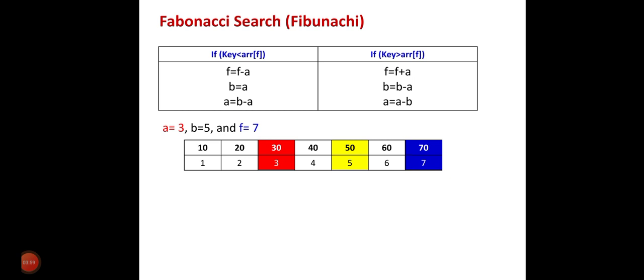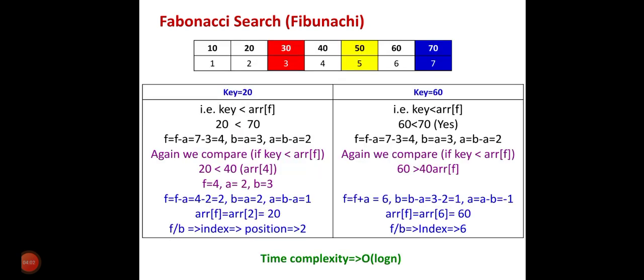Let us take one example. If the key element is 20, then 20 is compared with 70. Since 20 is less than 70, F equals F minus A, which is 7 minus 3 equals 4. B equals the previous value of A which is 3, so B equals 3. And A equals B minus A, where B is 5 and A is 3, so A equals 2. Now we compare the key element with array[F], where F is now 4, so array[F] is 40. We compare 40 with key element 20 and repeat the same procedure.